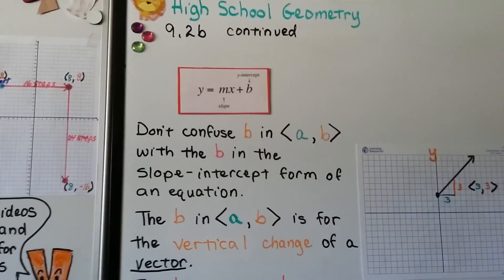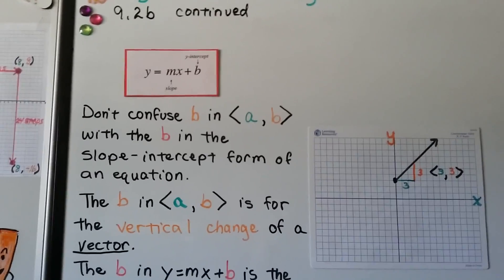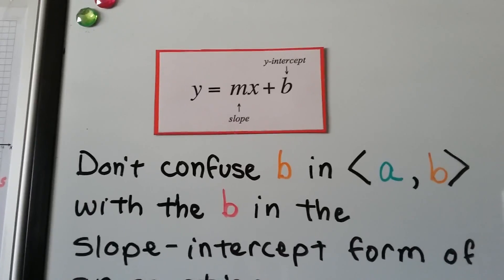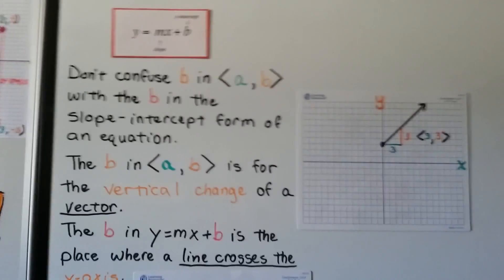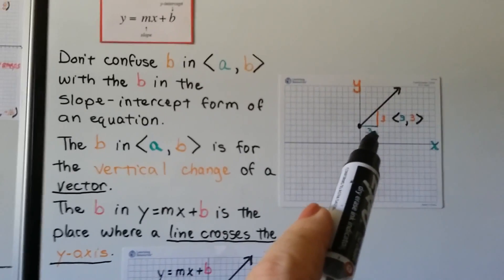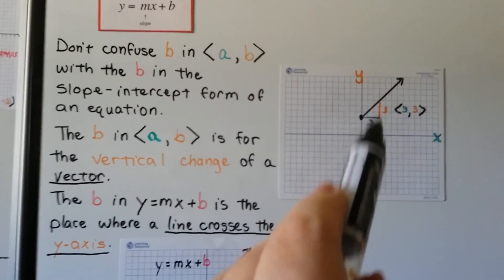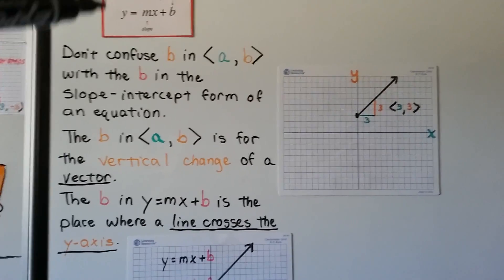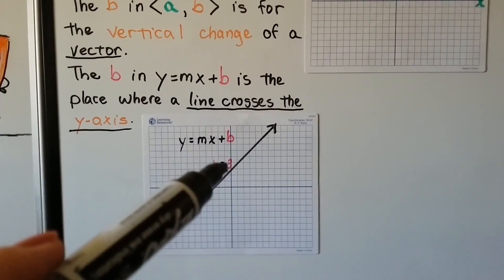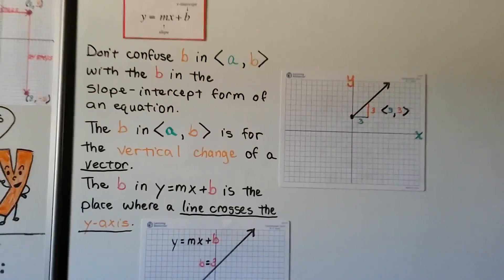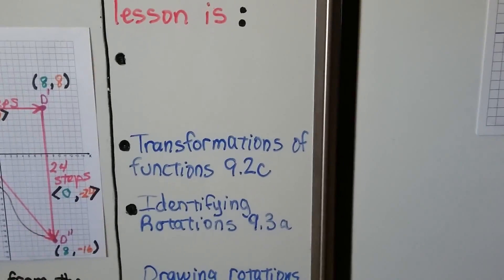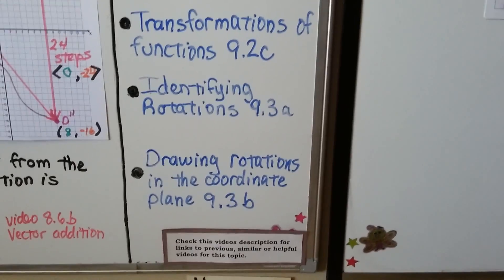One important note: don't confuse the b in the vector notation <a, b> with the b in the slope-intercept form of an equation y = mx + b. The b in <a, b> represents the vertical change of a vector, while the b in y = mx + b is where the line crosses the y-axis. These are two completely different things. Our next lesson is transformations of functions — 9.2c — the last part of lesson 9.2, before we go on to rotations in lesson 9.3.